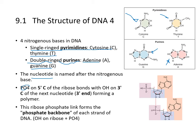The phosphate group is attached to the five-prime carbon. This bonds with the hydroxyl group on the three-prime carbon of the next nucleotide — this is how a new nucleotide gets attached. These ribose-phosphate links form the phosphate backbone, with the hydroxyl group and phosphate group making the link.